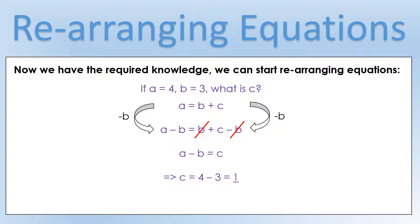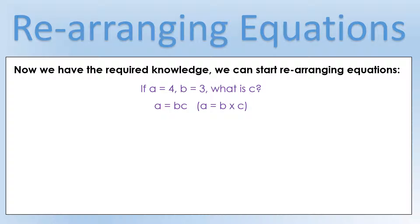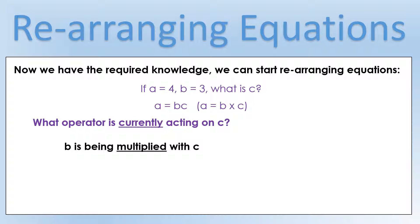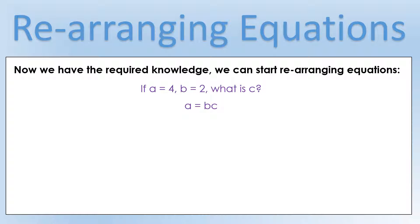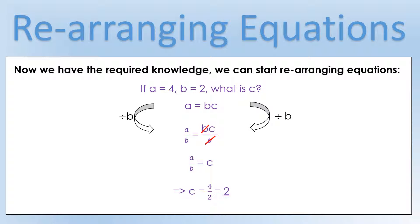Plugging in the numbers — a is 4, b is 3 — we get c equals 1, exactly as we saw at the start. Now what if the equation is in a different form? Say quantity a equals quantity b times quantity c, often written with b and c next to each other or with a dot between them. What operator is acting on c? It's being multiplied by b. So we divide both sides by b. We get a divided by b on the left, and bc divided by b on the right. The b's cancel, and we end up with c equals a divided by b. Plugging in the numbers gives c equals 2 — and indeed 2 times 2 is 4.